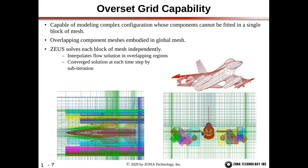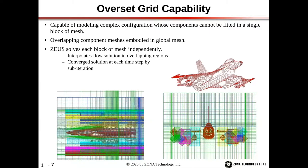Looking at the front view of the aircraft: the vertical tail is in a different block, and the underwing stores and pylons are in separate blocks. For a missile with four fins, the missile body and pylon are in one block of mesh — the dark blue. Each of the four fins (both fore and aft) are in the same block, with four separate blocks for the fins. All these blocks are embedded in the main block, which contains the fuselage, wing, and tail. During each time step, Zeus takes the flow solution in the main block and sub-blocks and interpolates back and forth for communication between the blocks.